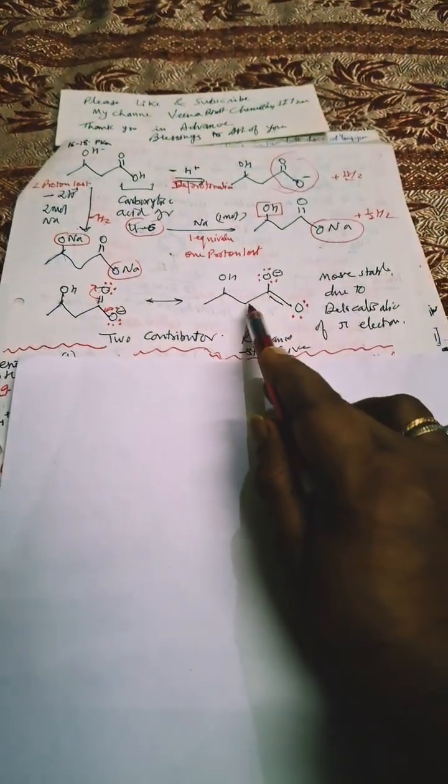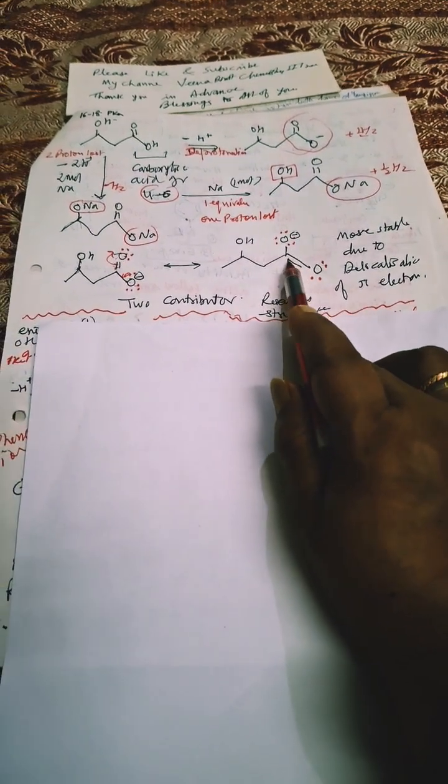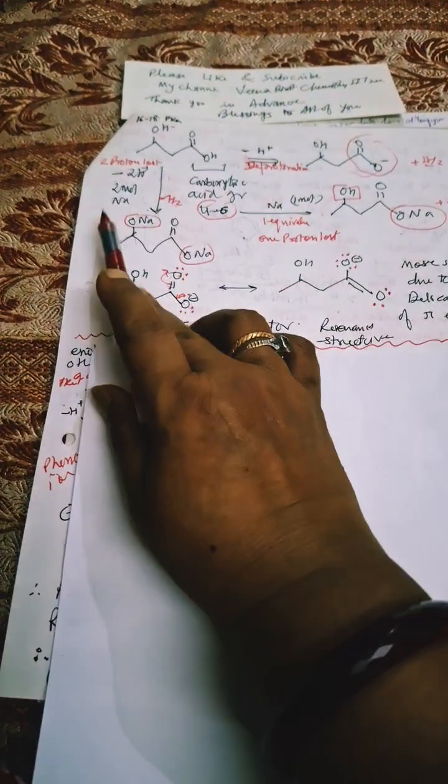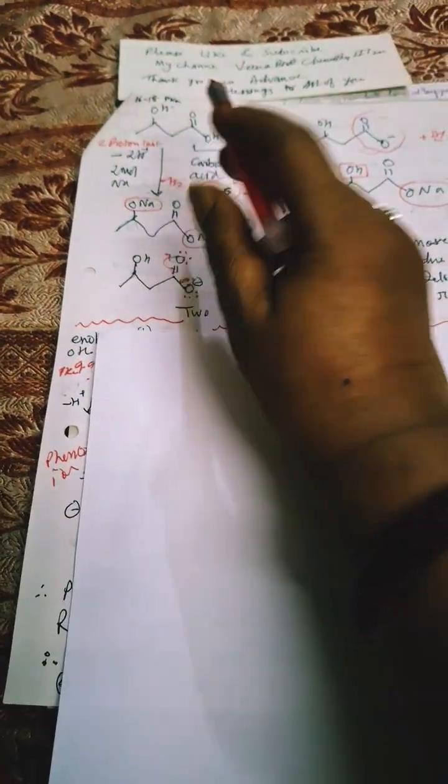Most stable structure, delocalized function will take place, resonance takes place which will make this carboxylate ion more stable. Conjugate base is more stable so this is more acidic. In case of alcohol there will be no such type of resonance.